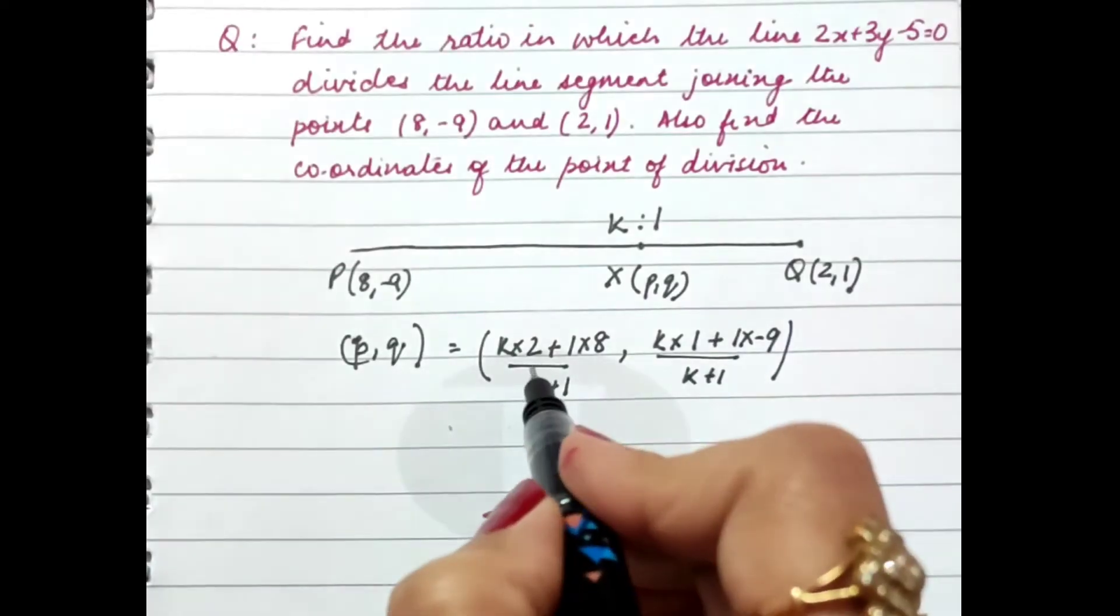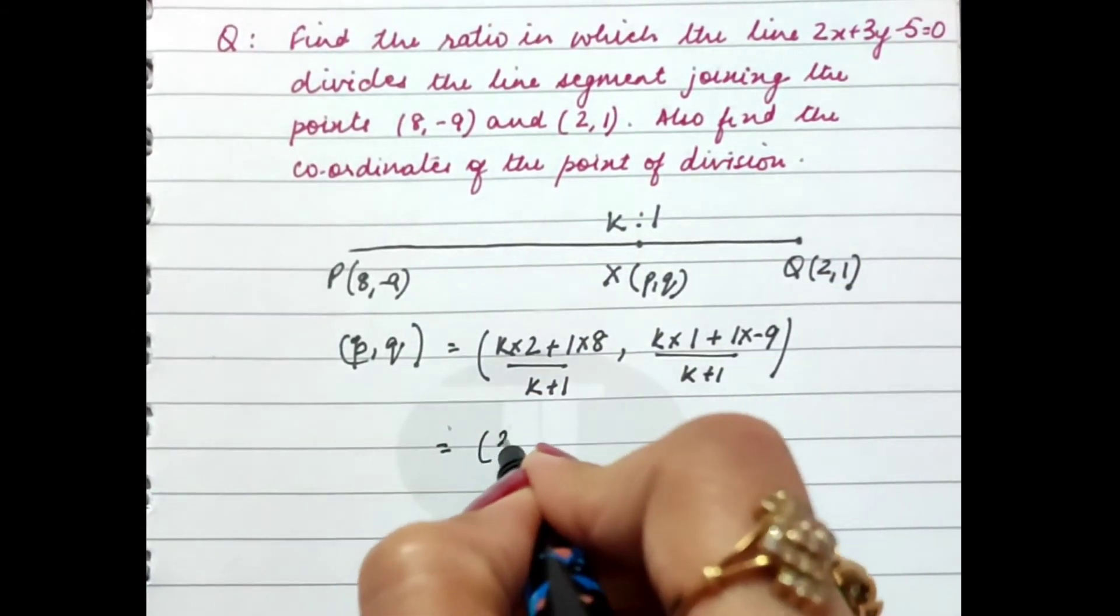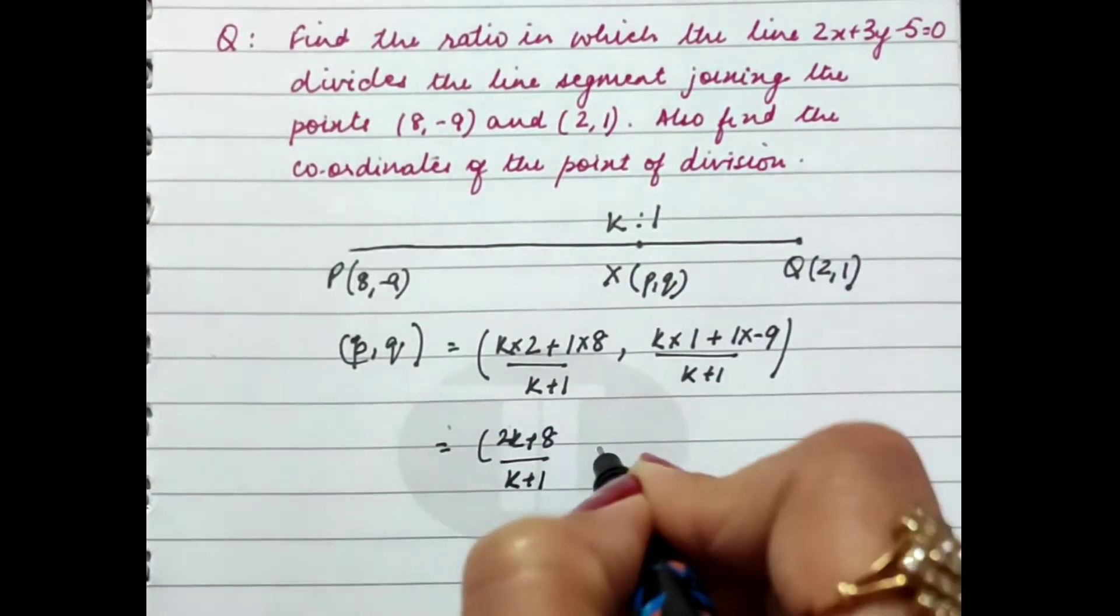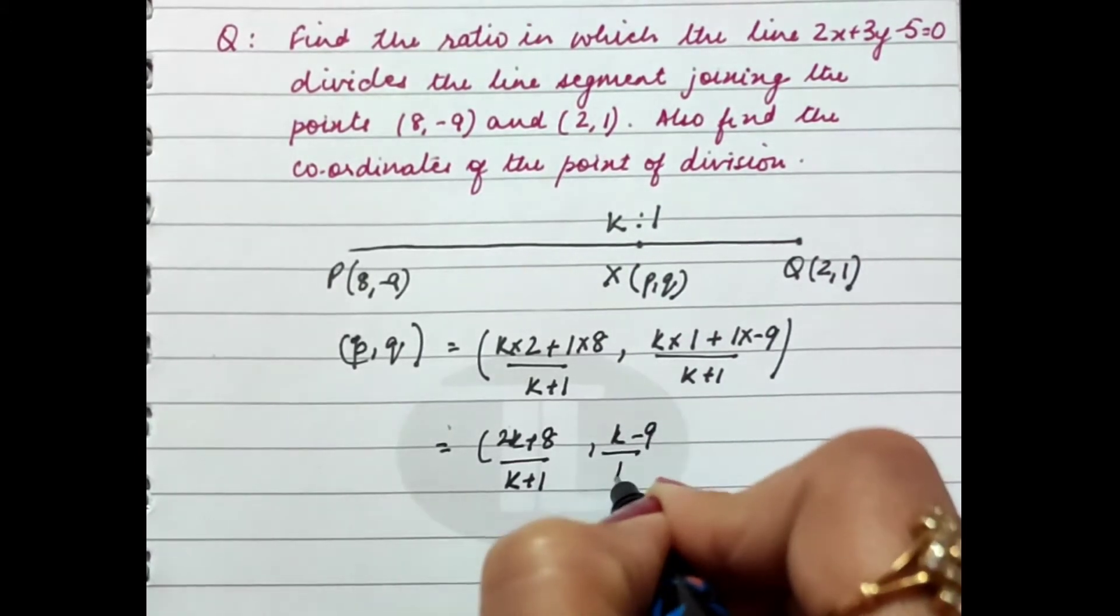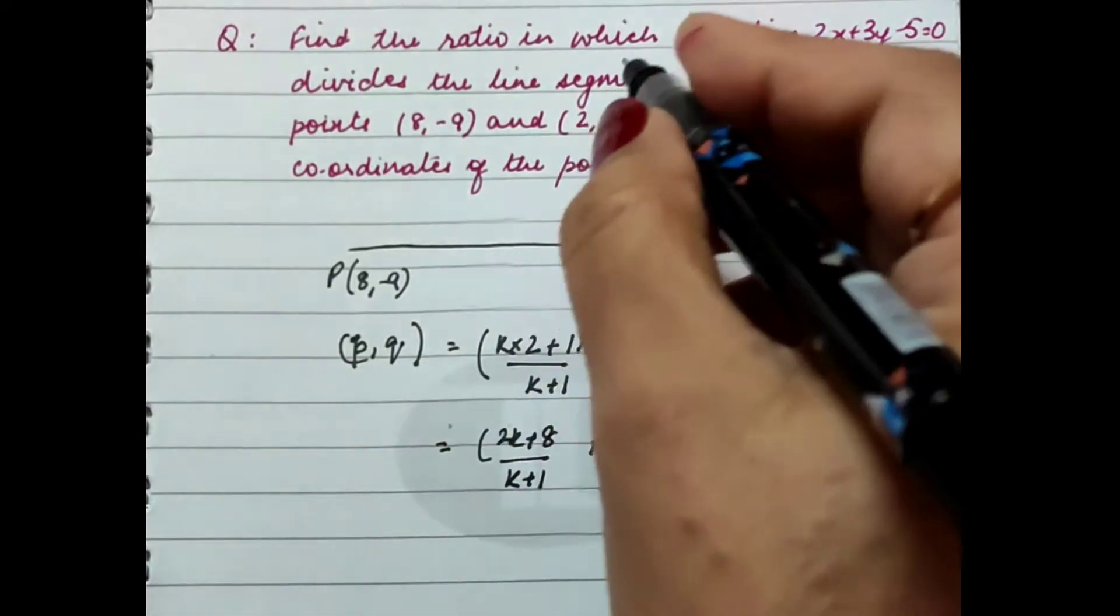Now this point lies on the given line. Let's simplify this point first. We get ((2k+8)/(k+1), (k-9)/(k+1)). This point lies on the line.